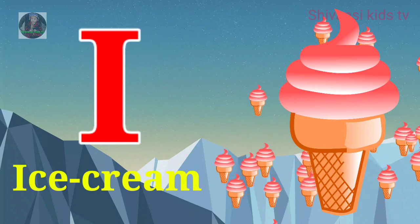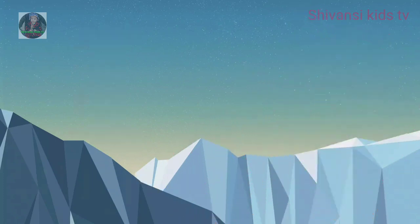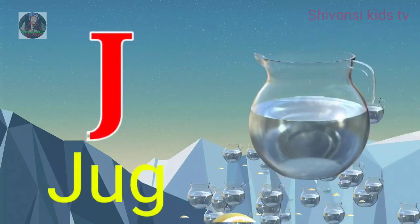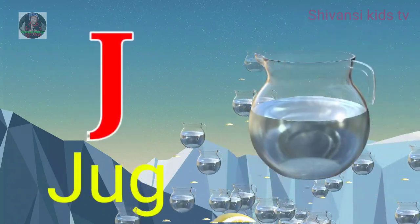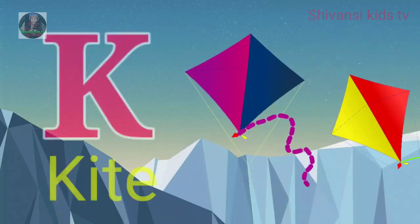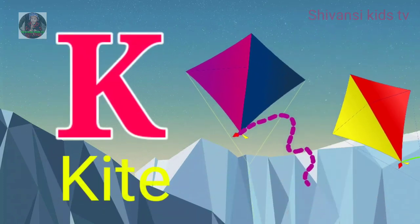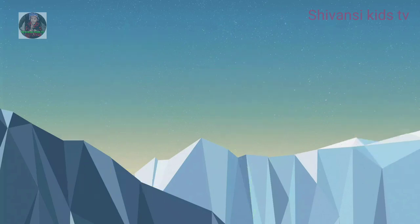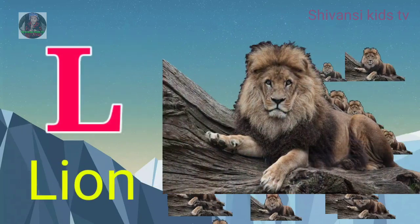I for ice cream, J for jug, K for kite, L for lion.